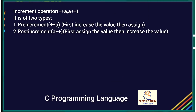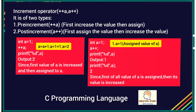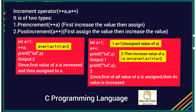Now let's learn the increment operator. It has two types: pre-increment and post-increment. In pre-increment (++a), the value of a is increased by one first and then assigned to the variable. In post-increment (a++), the current value is assigned first and then increased by one. With pre-increment, the output of a is two because it incremented before assignment. With post-increment, the first printf prints the original value assigned to a, and the second printf prints the already-incremented value.